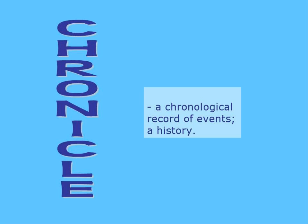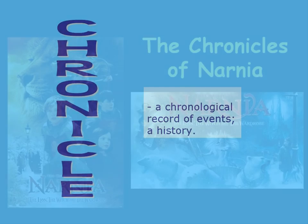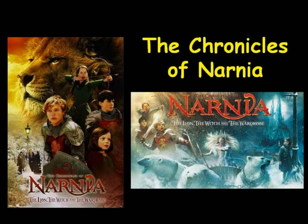Chronicle is another example of a word containing the root chron. A chronicle is a record of events arranged in chronological order. The Chronicles of Narnia is a collection of books that tell stories of events that happened in Narnia over a long period of time.